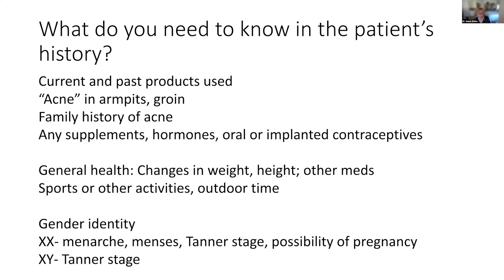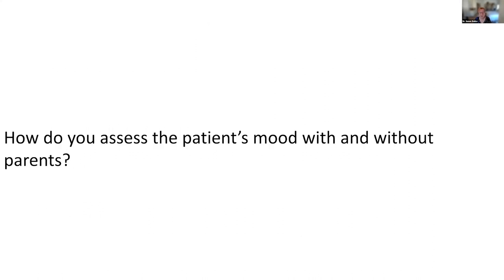Ask about gender identity. If their chromosomes are XX, when did their period start and what are their periods like now? A red flag is irregular periods after one year. Ask about Tanner stage and whether pregnancy is possible — and for boys, also consider their Tanner stage.